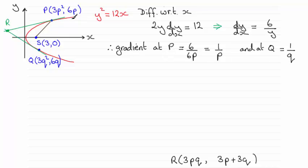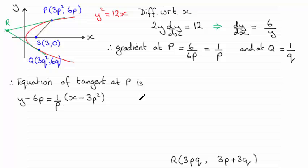So now we're in a position to get the equation of the tangent at P. So if we use the form Y minus Y1 equals M bracket X minus X1, then the equation of the tangent at P turns out to be Y minus 6P equals 1 over P, X minus 3P squared. I'm going to times through by P and rearrange it to make X the subject. If you do that, you end up with X equaling PY minus 3P squared.